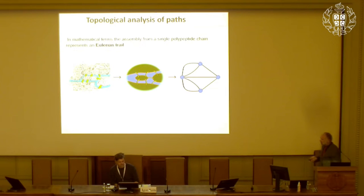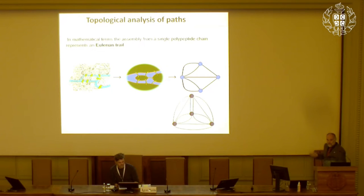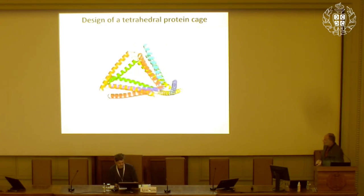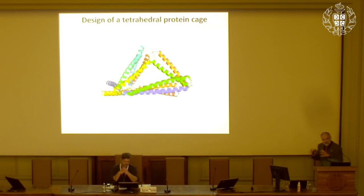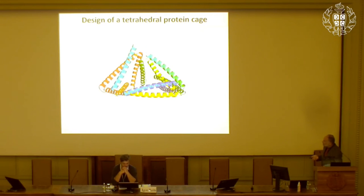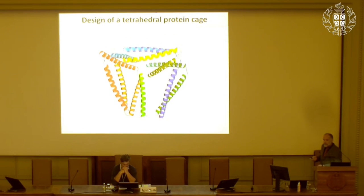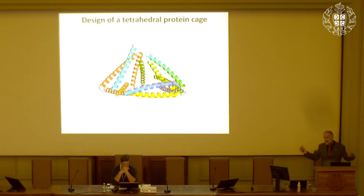Applying Euler's rules to our tetrahedron, we can make a double Eulerian trail. With the help of our mathematician colleagues, they proved it is possible to make any type of polyhedra using these principles. The first structure we designed is the tetrahedron — the simplest three-dimensional scaffold. A tetrahedron is composed of six edges, which means 12 coiled-coil forming segments connected into a single polypeptide chain.